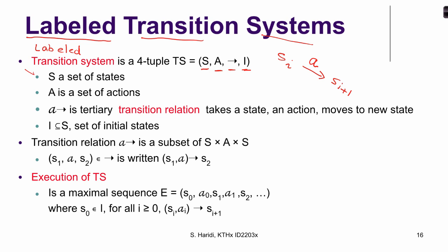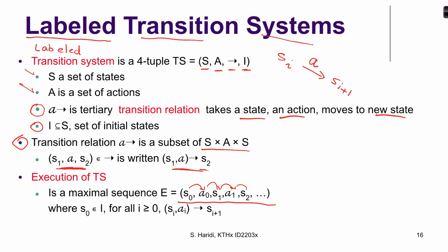We know what S is. A is a set of actions. The transition relation takes a state and an action and moves to a next state — it is a subset of S × A × S. It is sometimes written as: you are in state S1, you perform action a, and move to S2. The rest is as before. The most important aspect of the labeled transition system is that an execution now interleaves states and actions: state, action, state, action, and so on.